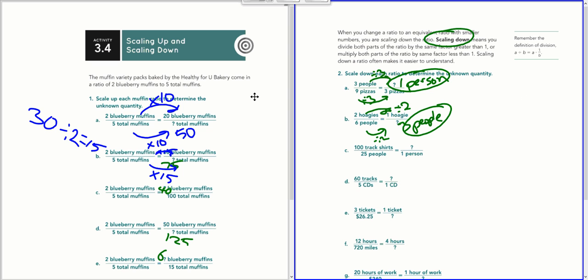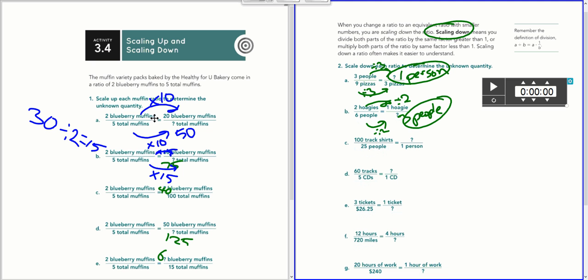Then we gave you some time to practice scaling up here on this situation. And then scaling down, we saw, is basically dividing the top number and the bottom number by the same factor.